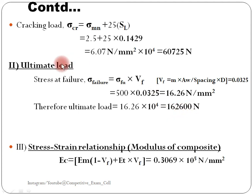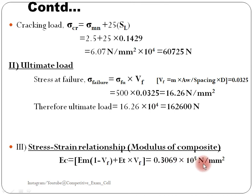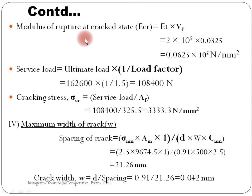Next, the stress-strain relationship, or modulus of composite. Ec equals Em times (1 minus vf) plus Et times vf. Using the known values of Em, Et, and the calculated vf, we get Ec equal to 0.3069 times 10 raised to 5 N/mm².